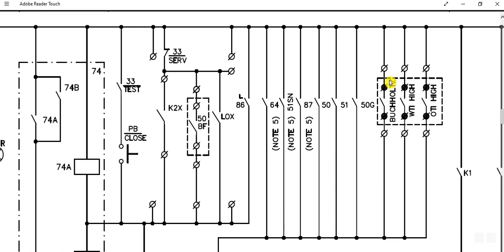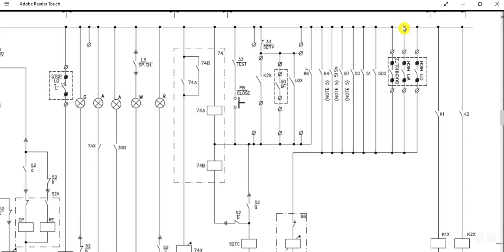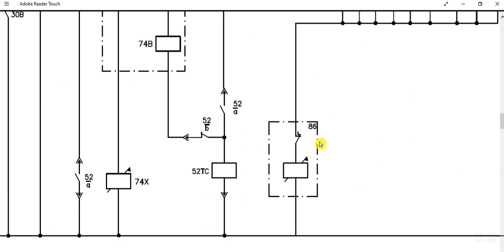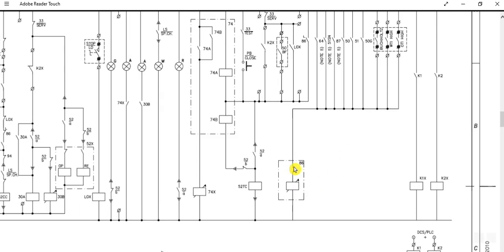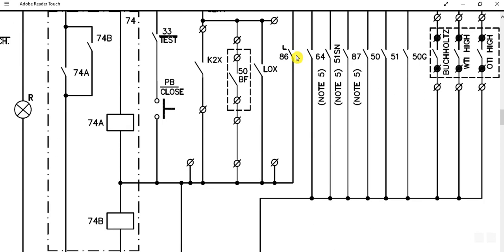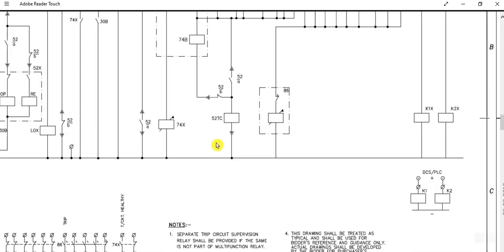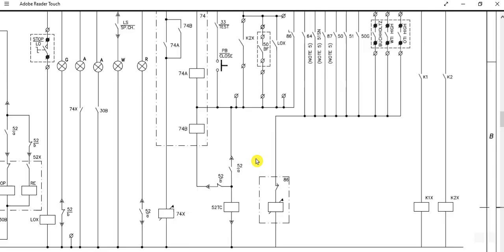Since this is an oil field transformer, there is a Buchholz relay inside the transformer. If the Buchholz relay trips, or the WTI — winding temperature indicator — is high, or the OTI — oil temperature indicator — exceeds the set value, the circuit breaker will also be tripped. These signals trigger the 86 electrical lockout relay, and once the 86 relay contact closes, the trip coil of the circuit breaker is energized and the breaker is tripped.